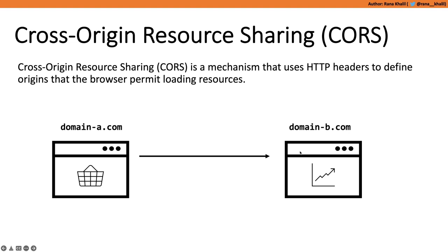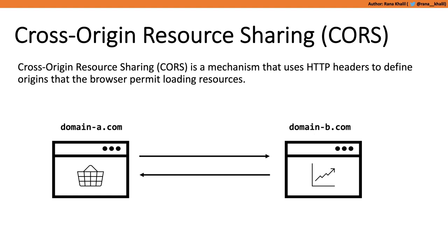Imagine you have domain A (a shopping application) and domain B (an analytics application). Domain A has a legitimate use case to access domain B's resources. Because they have different origins, the SOP would prevent that request. So domain B configures CORS rules telling the browser: if a request comes from domain A, allow it. This is how CORS works — the developers configure CORS rules on domain B's web application, and when a request comes from domain A, domain B allows that request to go through.